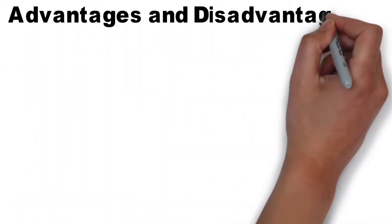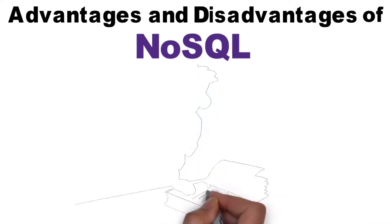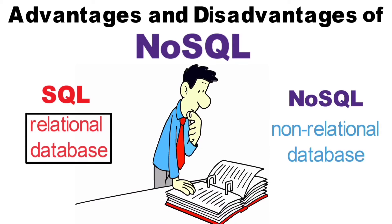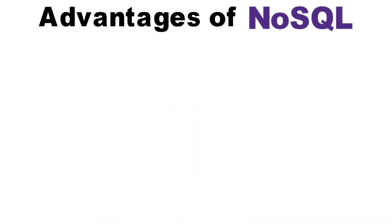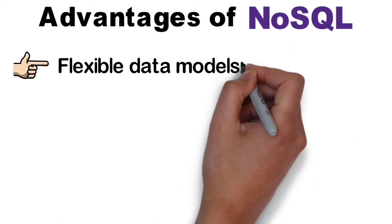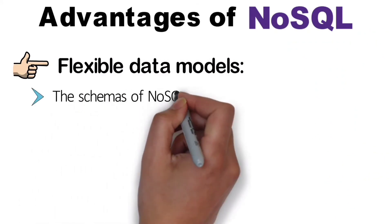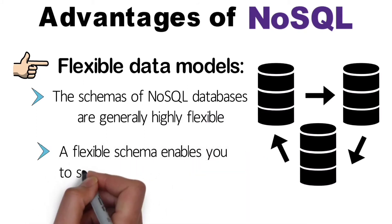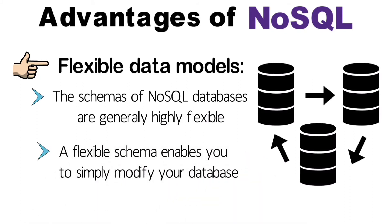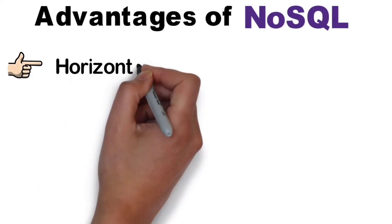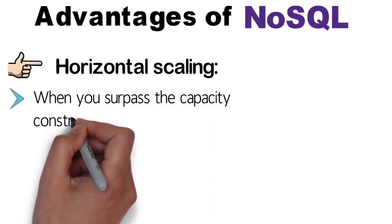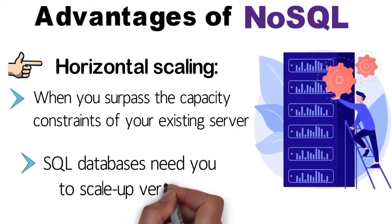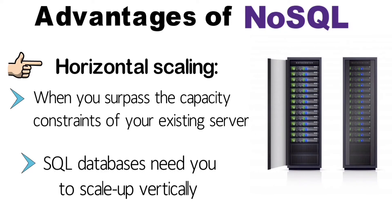Advantages and Disadvantages of NoSQL. NoSQL databases have several advantages and disadvantages over relational databases. Advantages: Flexible Data Models — the schemas of NoSQL databases are generally highly flexible, enabling you to simply modify your database as your needs evolve. Horizontal Scaling — when you surpass the capacity constraints of your existing server, most SQL databases require you to scale vertically, moving to a larger, more expensive server.